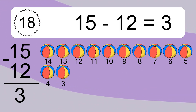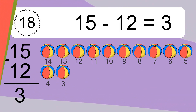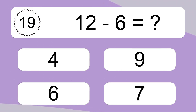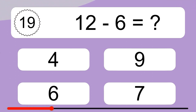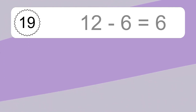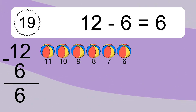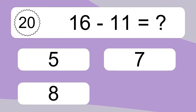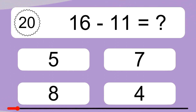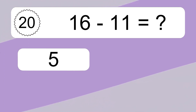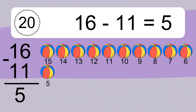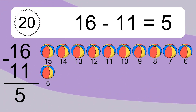12 minus 6 equals what? 12 minus 6 equals 6. Let's count it: 11, 10, 9, 8, 7, 6. 16 minus 11 equals what? 16 minus 11 equals 5. Let's count it: 15, 14, 13, 12, 11, 10, 9, 8, 7, 6, 5.